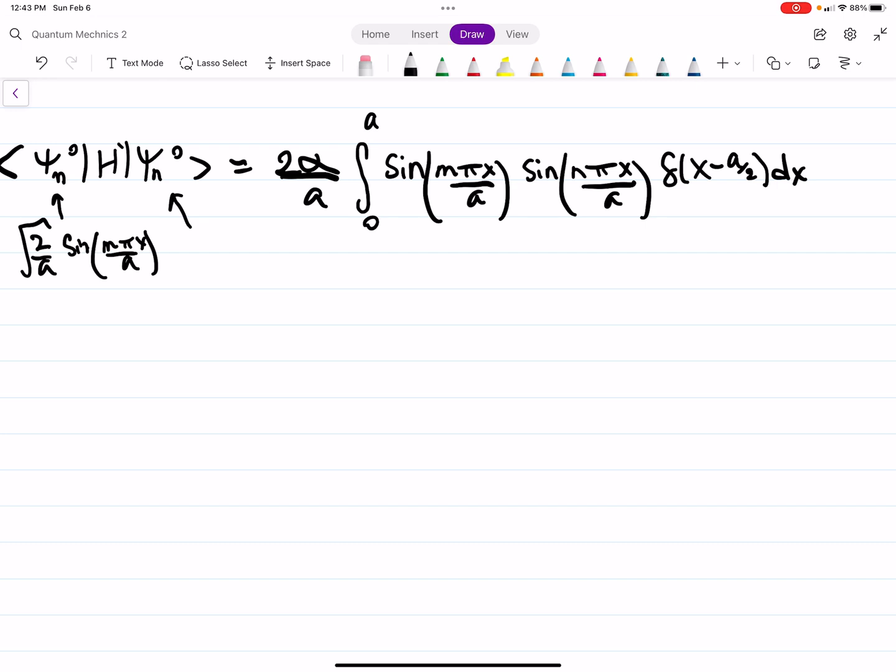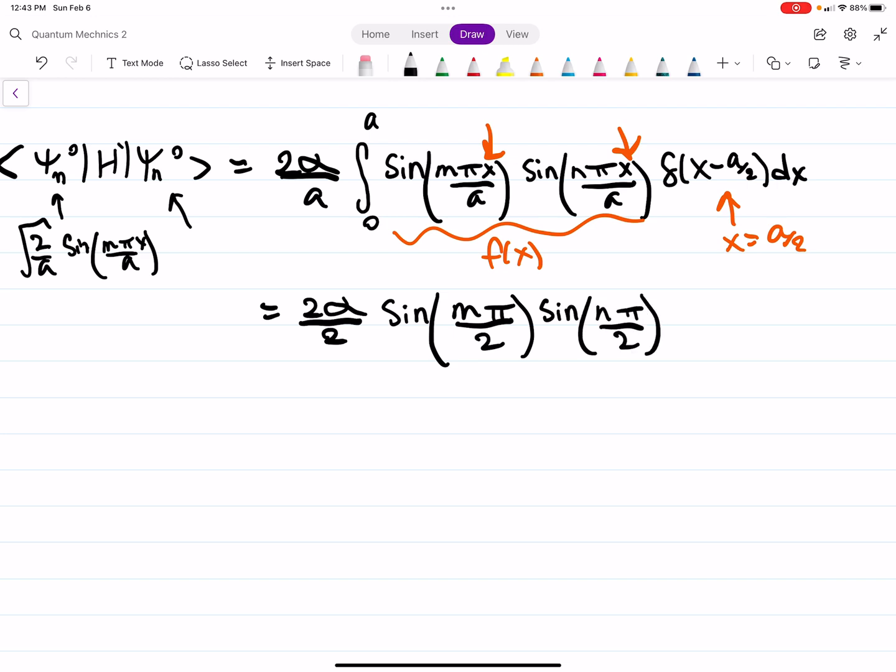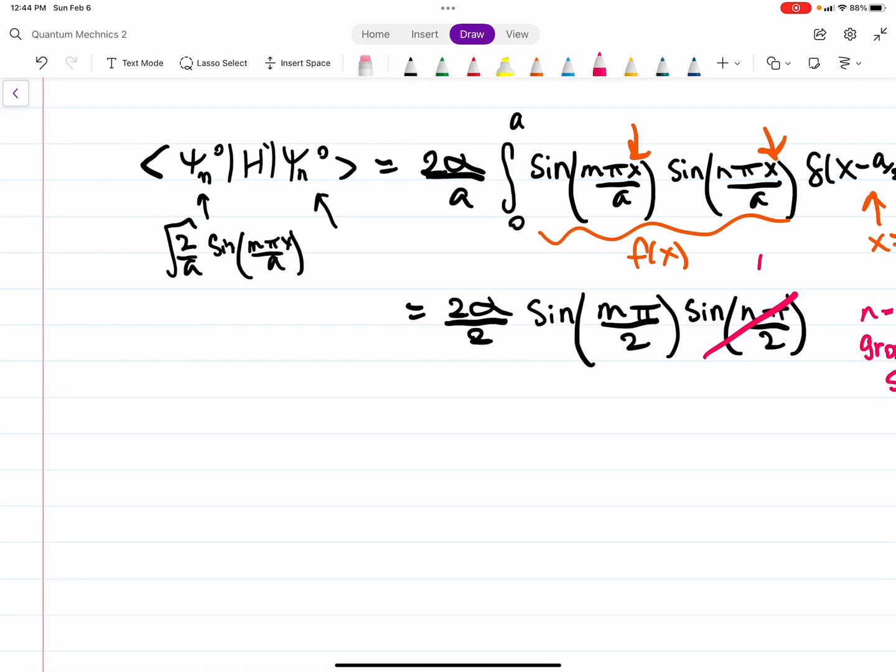So first off, let's go ahead and evaluate this. We don't have to plug in that it's the ground state yet, but we could. So let's think of this whole thing as your f of x, and the x value that makes this 0 is still a over 2. So we plug in a over 2 into your x's. If we do that, we'll have sine of n pi over 2, sine of m pi over 2. And this is for the correction to the ground state, so that means n equals 1, since it's the ground state. So this whole term is just 1, because sine of pi over 2 is just 1.